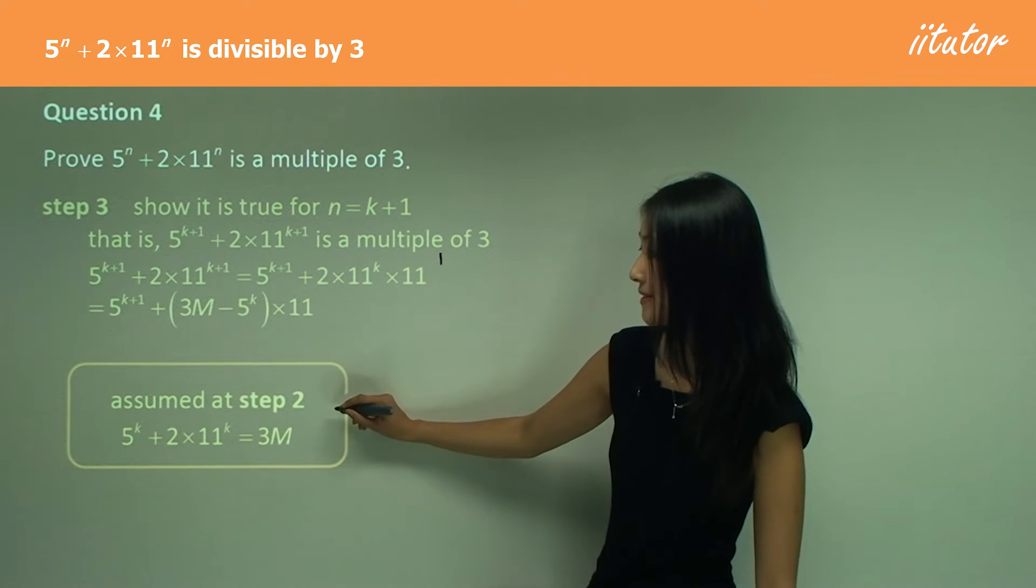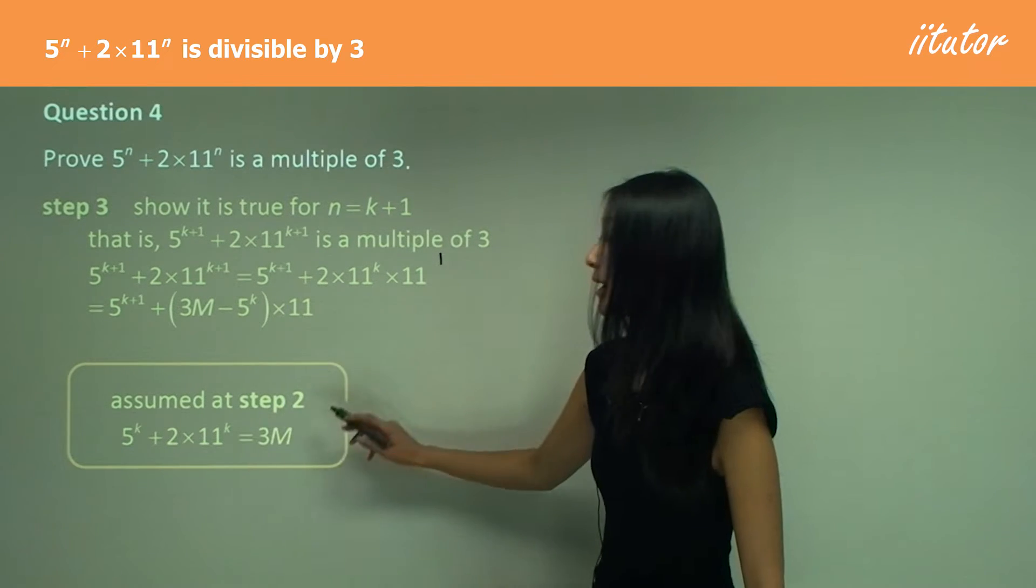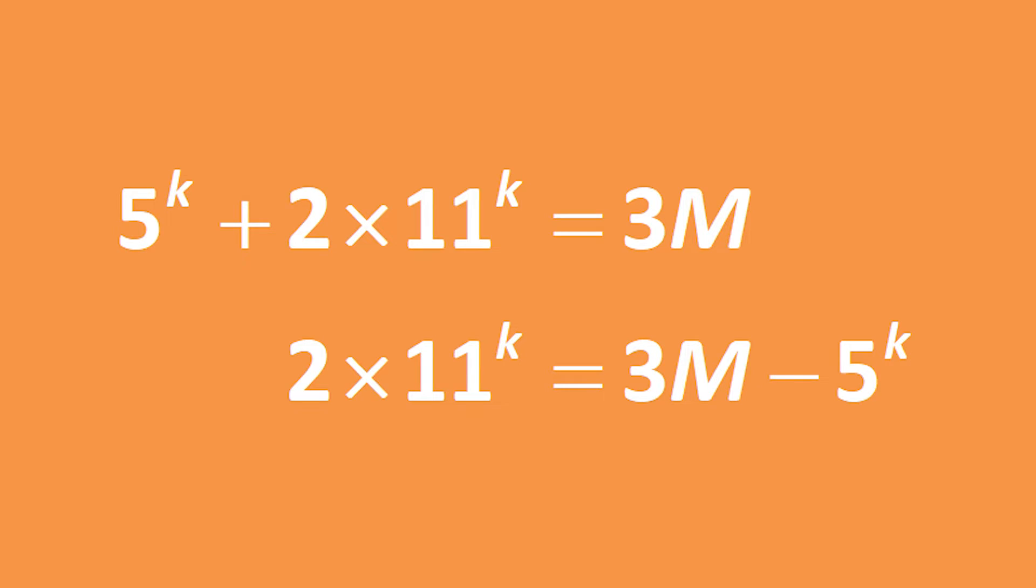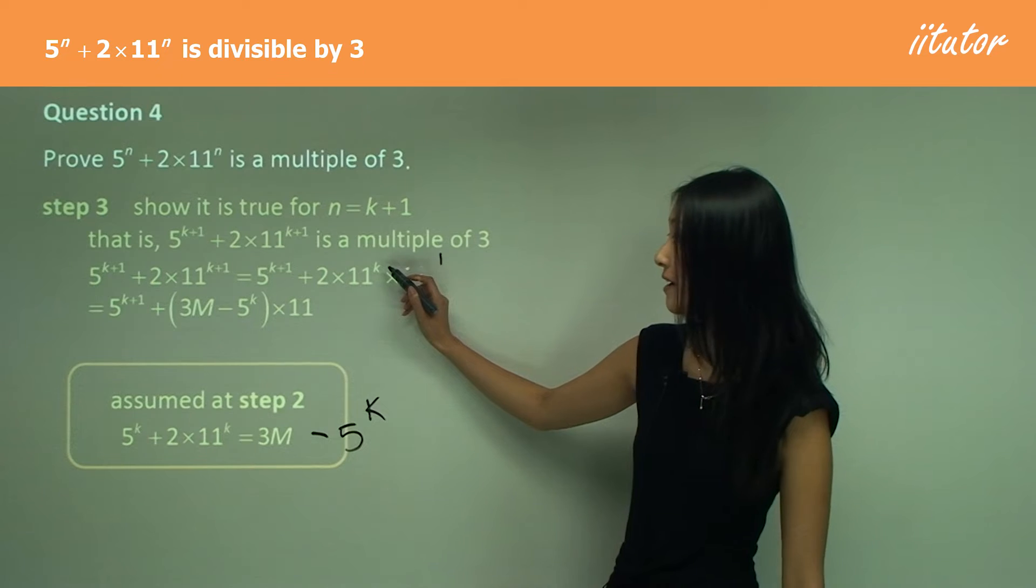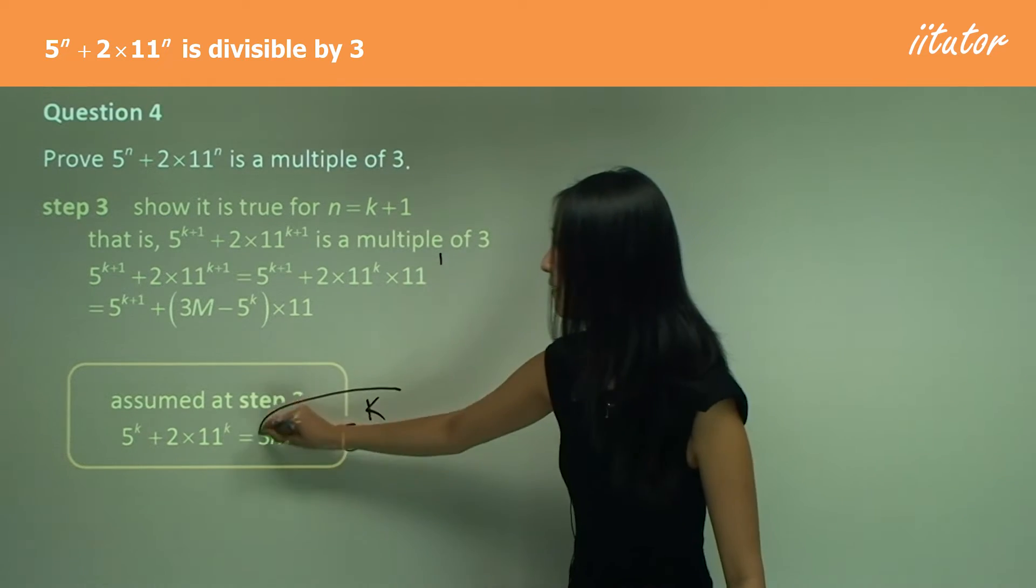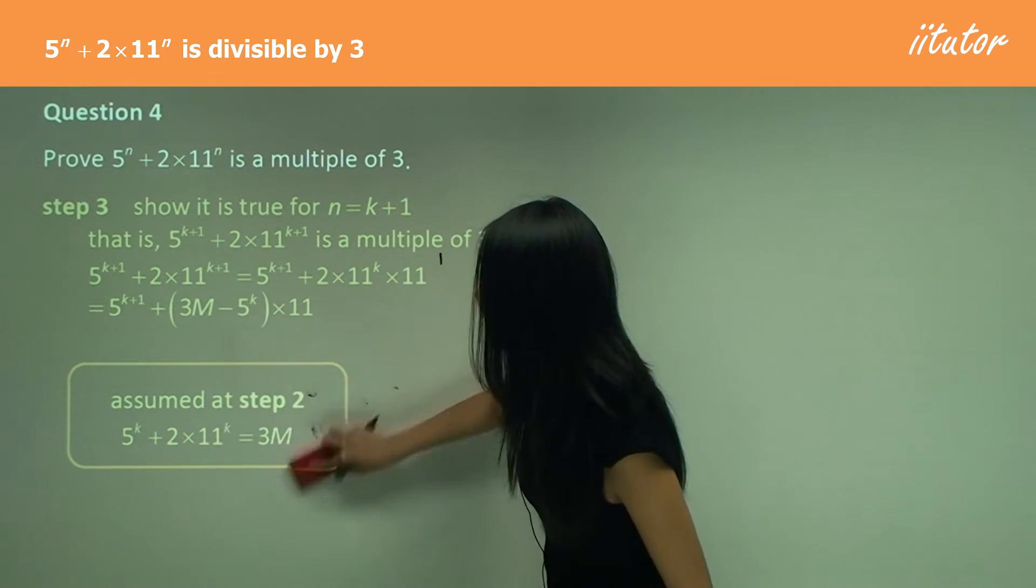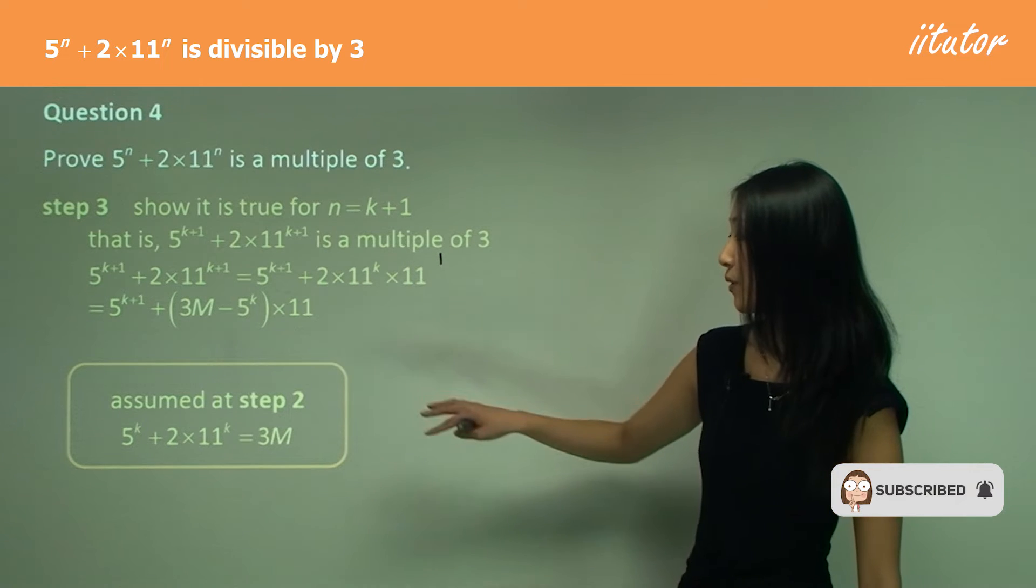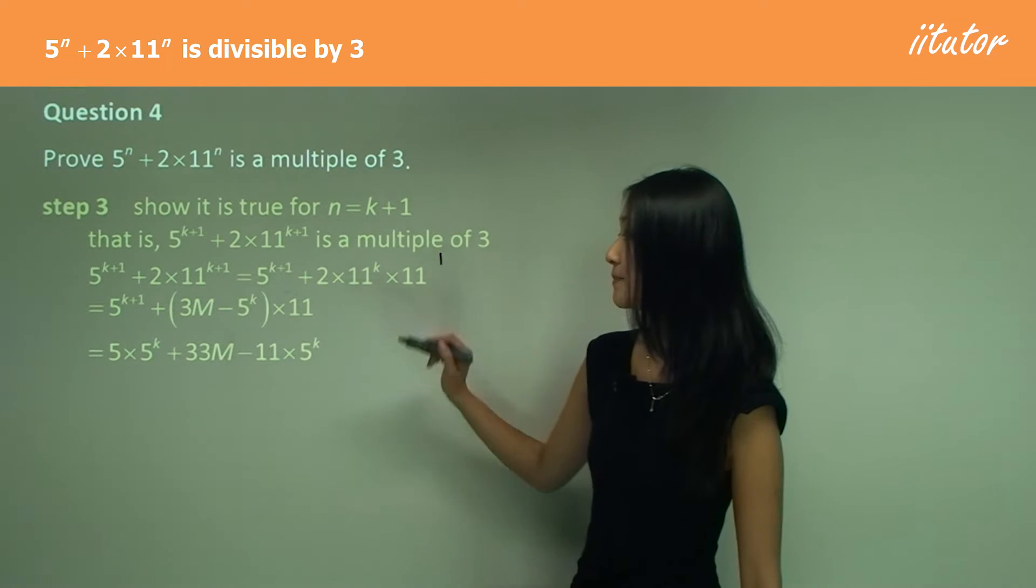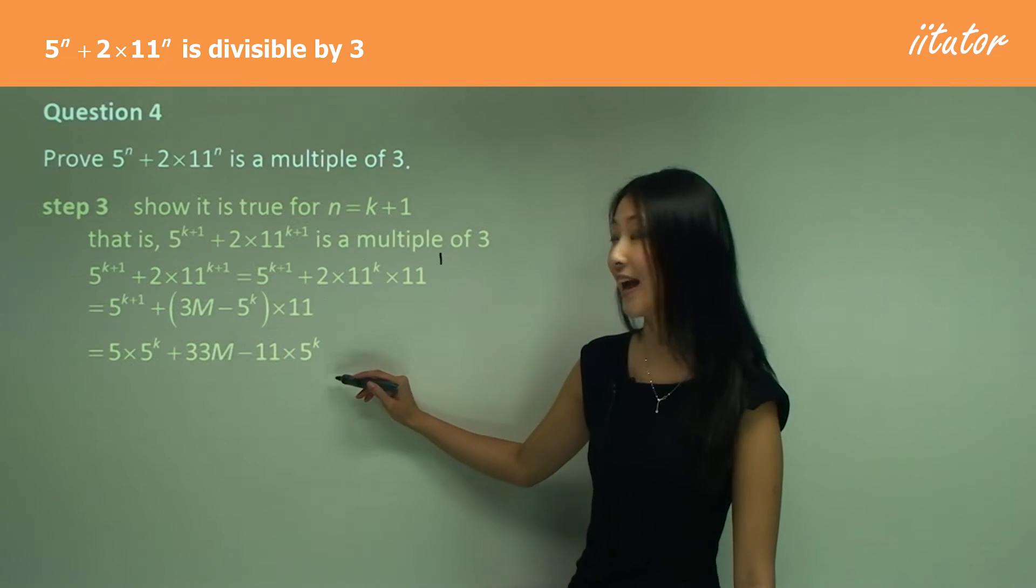We know from step two, 5^k plus two times this equals 3m. So we can subtract 5^k across and you can see two times 11 to the power of k, which is what we have here. I have just substituted for that. Once I've used the assumption, I know now that what's left over is manipulation of this algebraic equation. And I just have expanded that to become 33m minus 11 times 5^k.